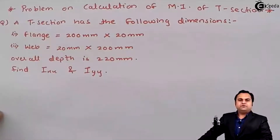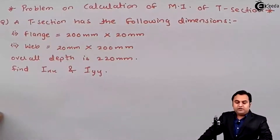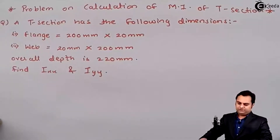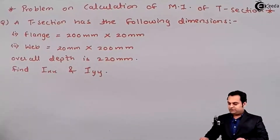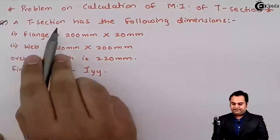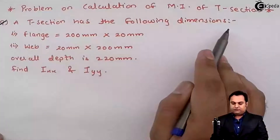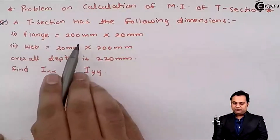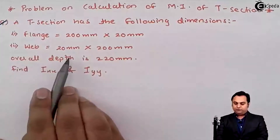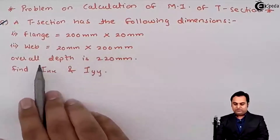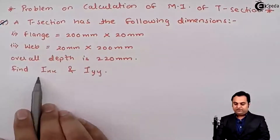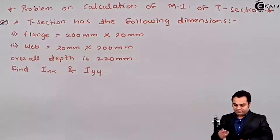Hello friends. In this video we will see a problem on calculation of moment of inertia for a T-section. The question gives a T-section with the following dimensions: flange 200 mm × 20 mm, web 20 mm × 200 mm, and an overall depth of 220 mm. We have to find IXX and IYY.